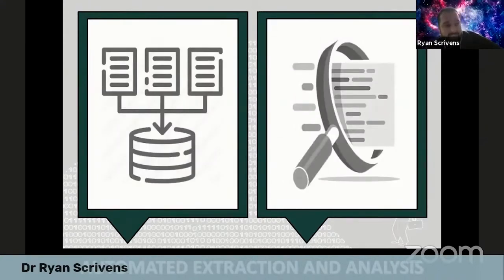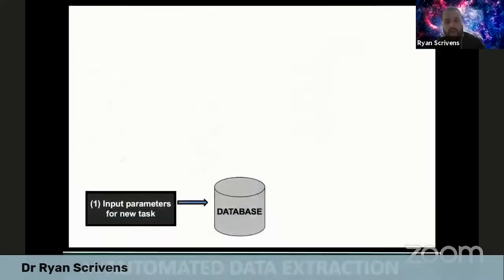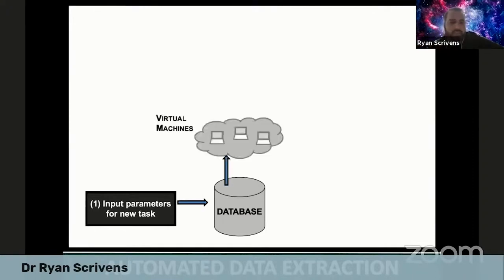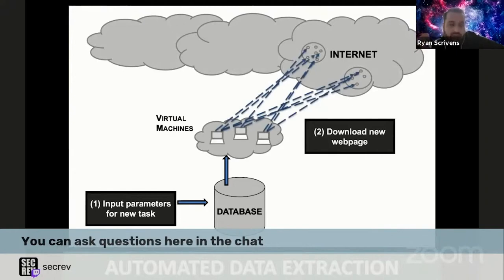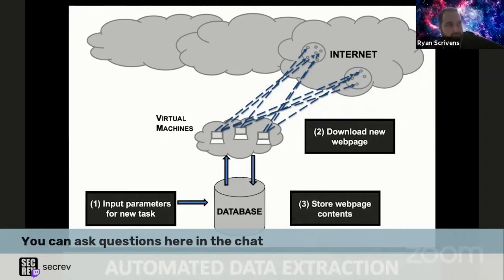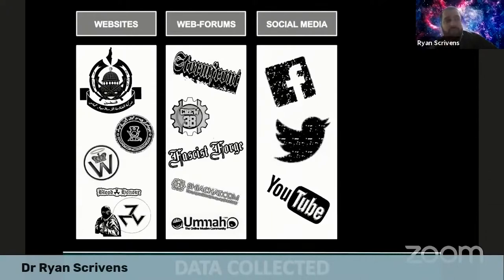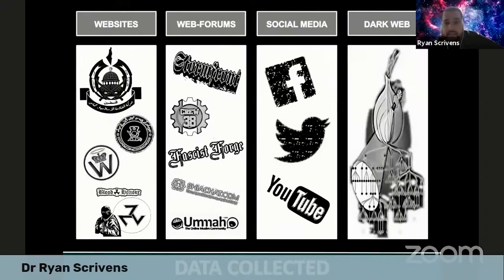This is where automated extraction and analyses have really come into play in the last 15 years or so. How automated data extraction works is: researchers input parameters — for example, to download all content from a specific website — which speaks to a database, which speaks to virtual machines. The virtual machines are directed to that website, all web pages are pulled down according to the set parameters, and binned in the database for analyses. Within the terrorism and extremism space, data collected has historically been extremist or terrorist websites, web forums or discussion boards, social media presence, and in some cases, dark web content related to terrorism and extremism broadly.